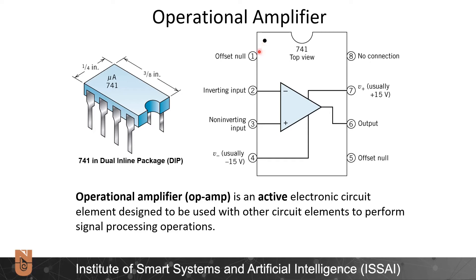The upper left corner of this operational amplifier is denoted with a black dot, and we start enumerating the pins from this point. We have 8 pins: 1, 2, 3, 4, 5, 6, 7, and 8, and 5 pins of this operational amplifier are important.